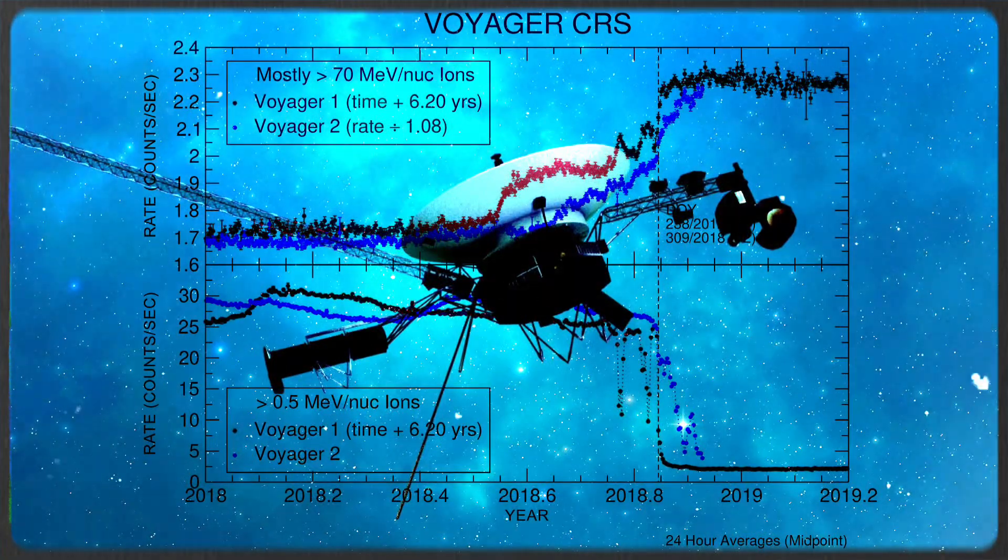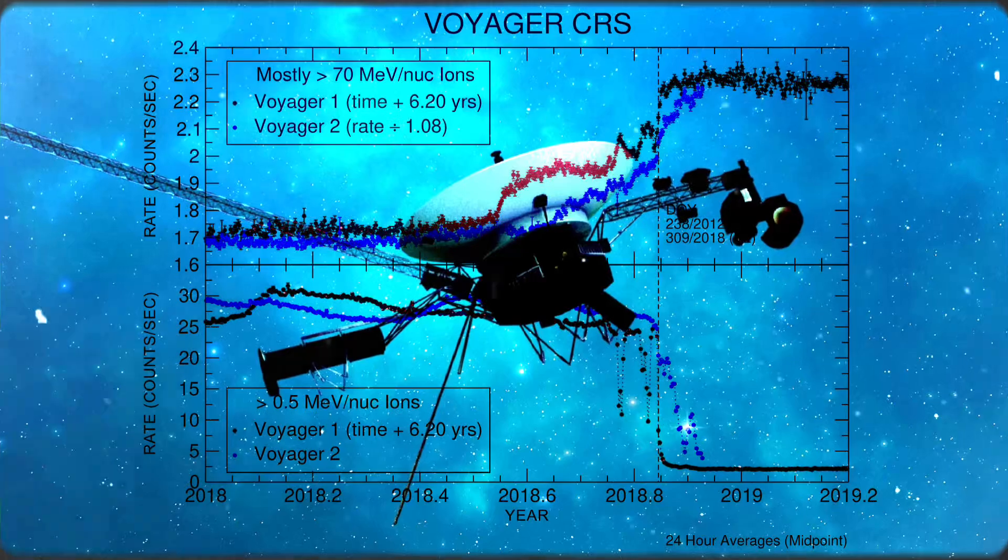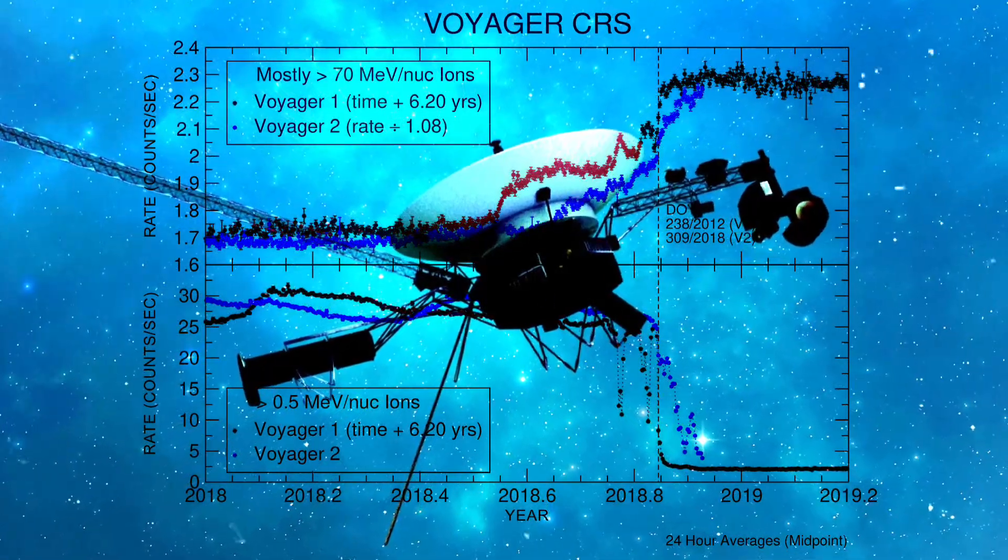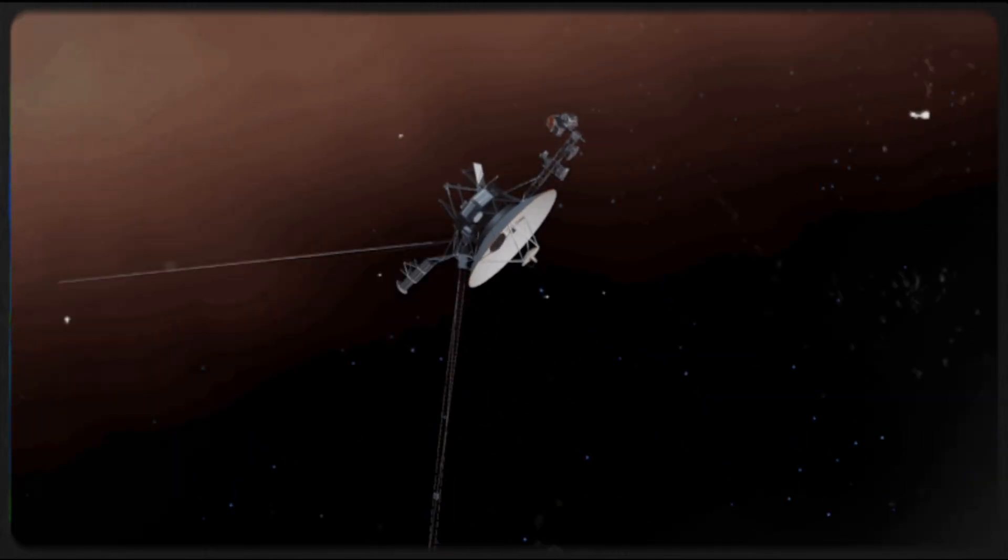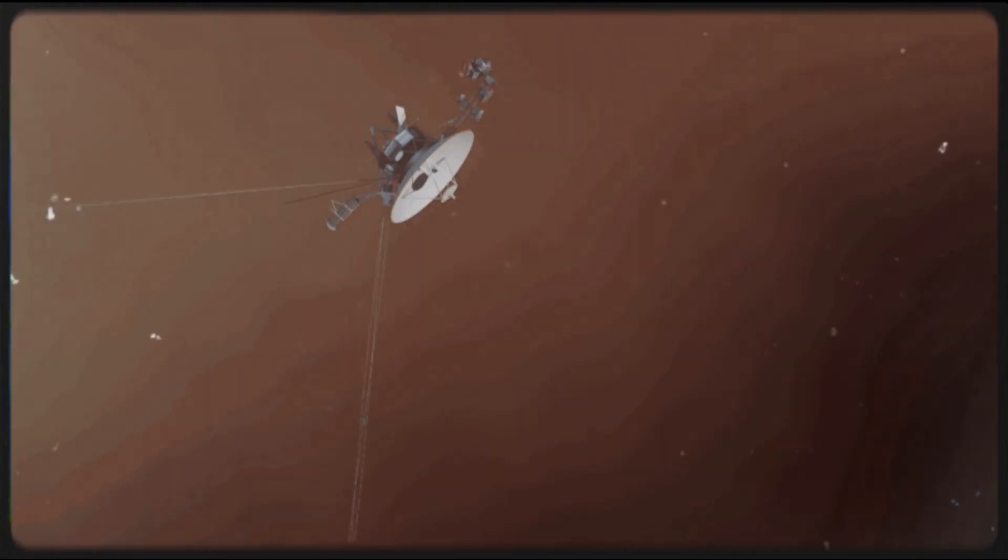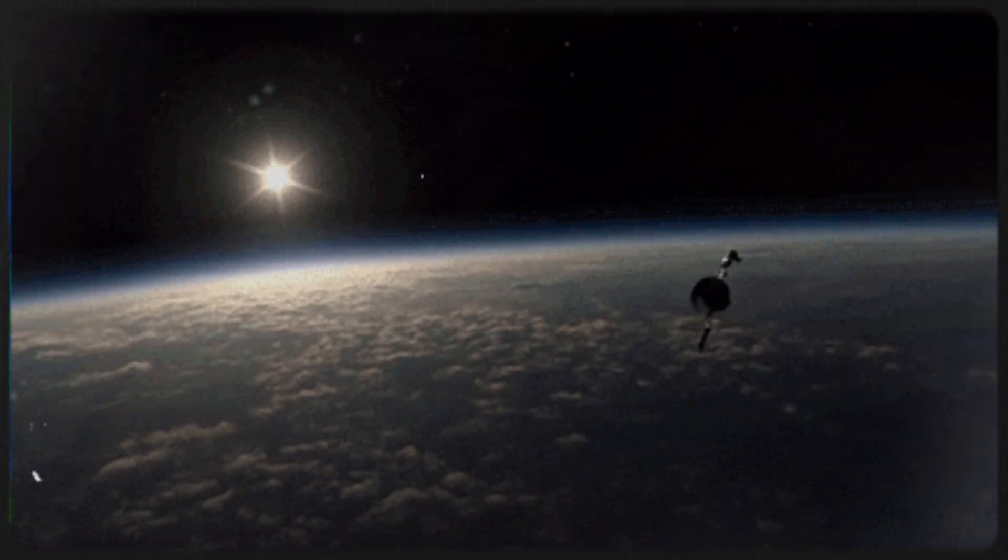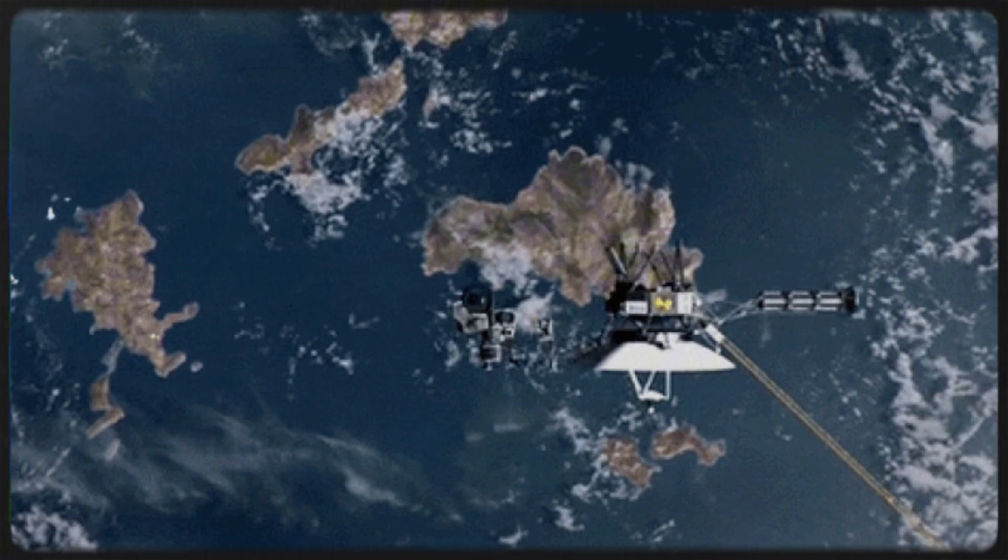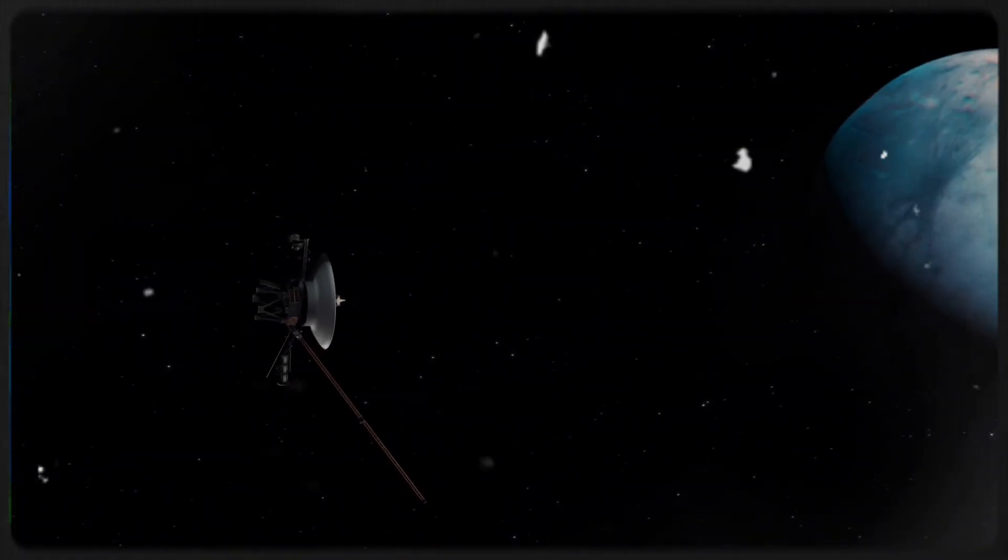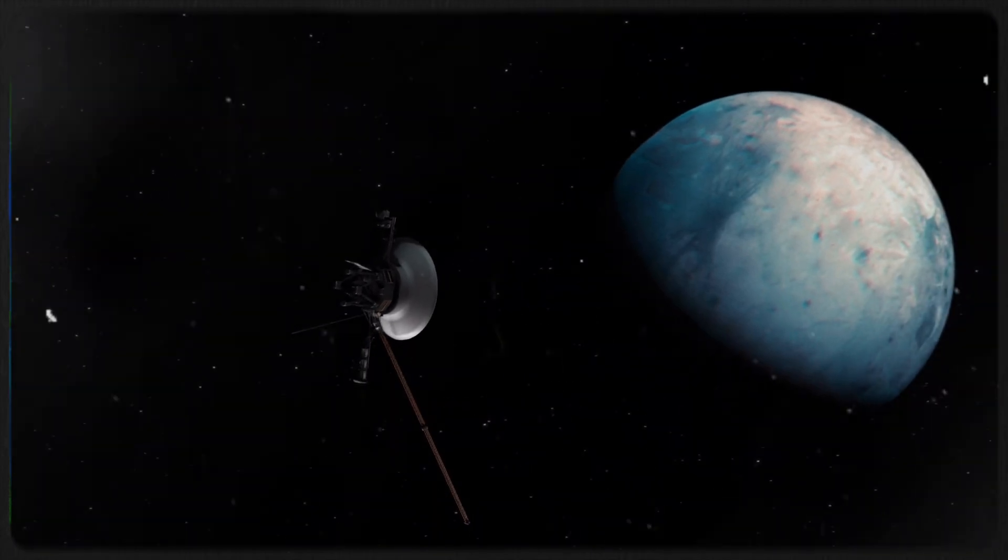As scientists continue to analyze Voyager's data, they gain a deeper appreciation for the complex environment at the solar system's edge. These findings reveal just a glimpse of the intricate and often puzzling processes that govern the interactions between our solar system and the wider galaxy. The discoveries made by Voyager 1 and Voyager 2 remind us of how much there still is to learn about the universe just beyond our cosmic doorstep.